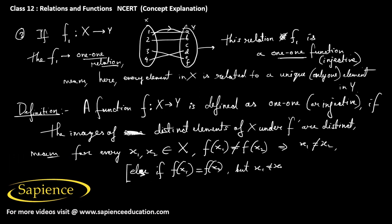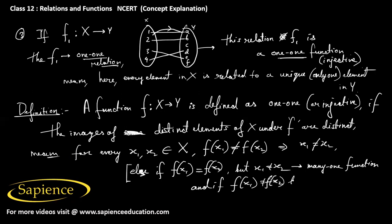If f(x1) = f(x2) but x1 ≠ x2, then it is called a many-to-one function. And if f(x1) ≠ f(x2) but x1 ≠ x2 cannot be guaranteed — that is, a one element maps to multiple images — then this kind of relation is not a function; it is called a one-to-many relation.